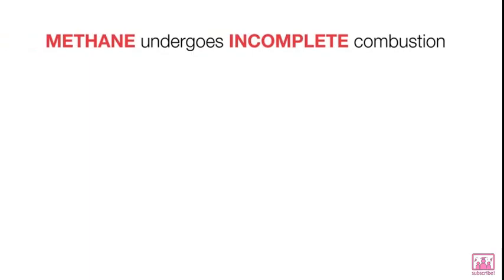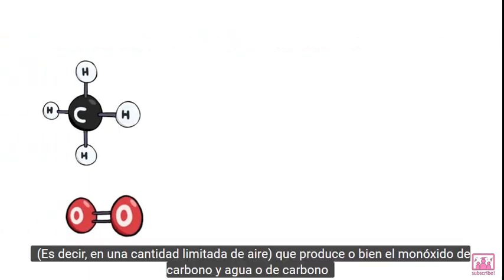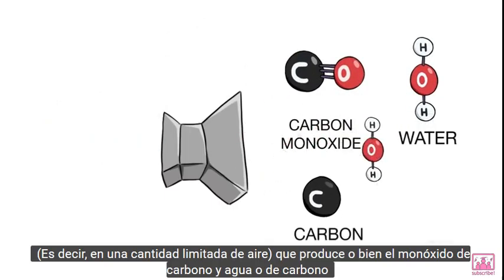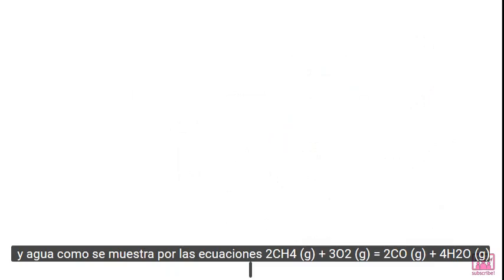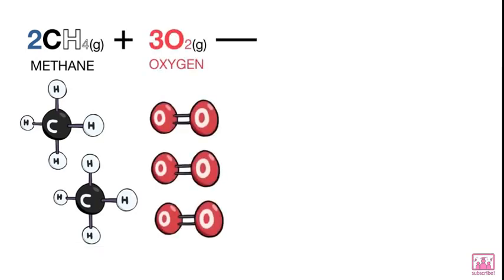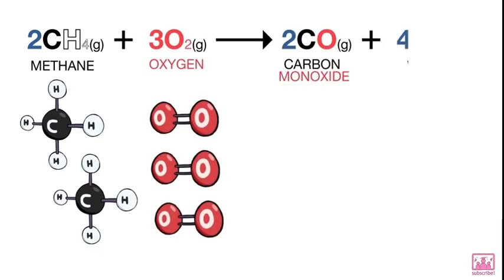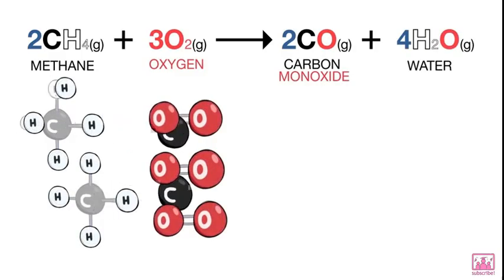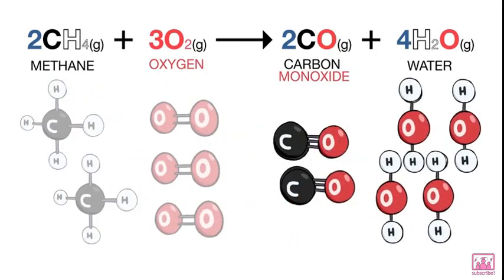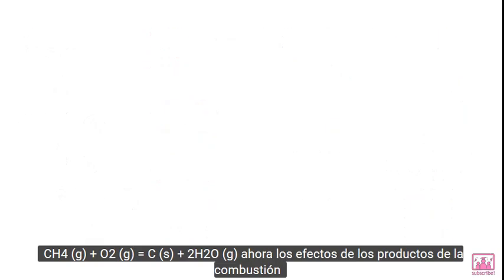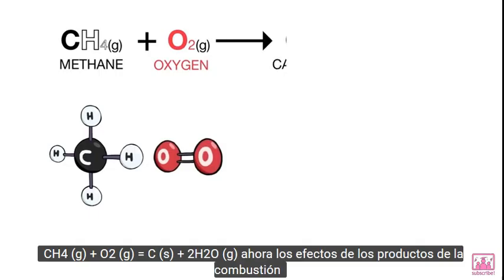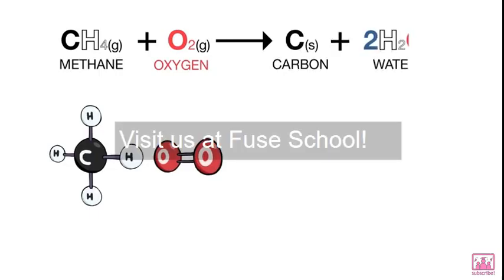When methane undergoes incomplete combustion, that is in a limited supply of air, it produces either carbon monoxide and water, or carbon and water.